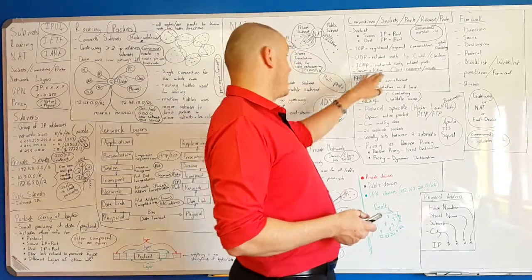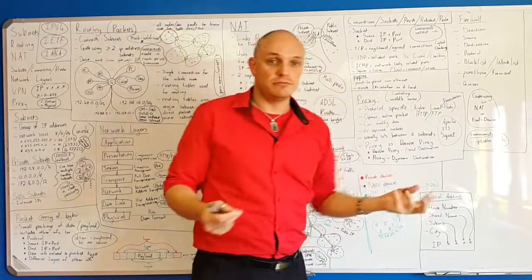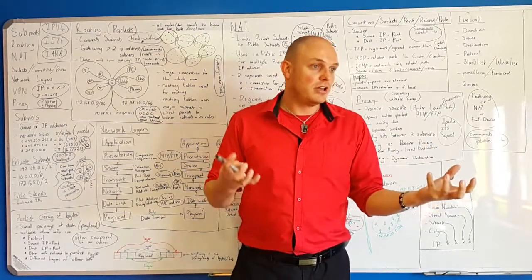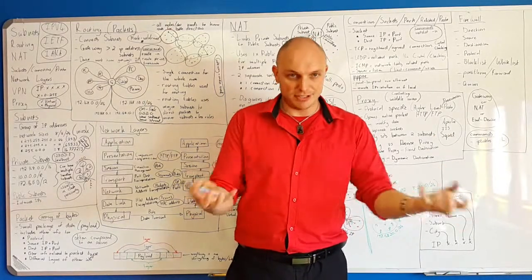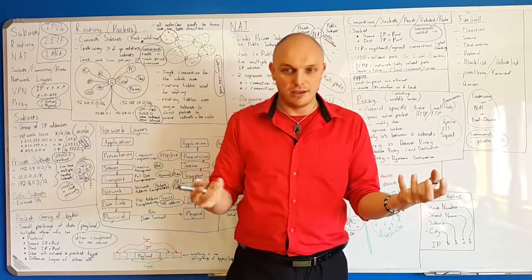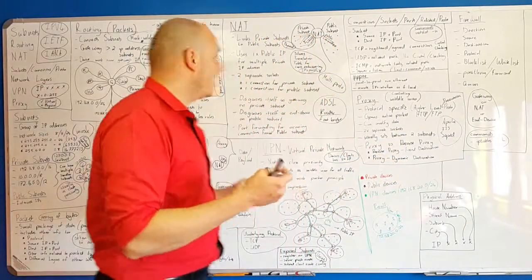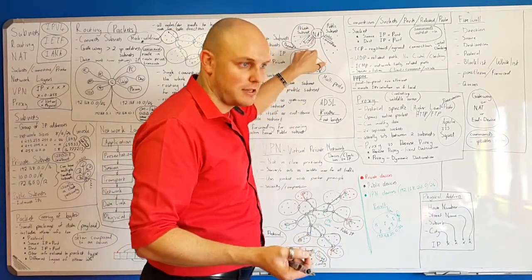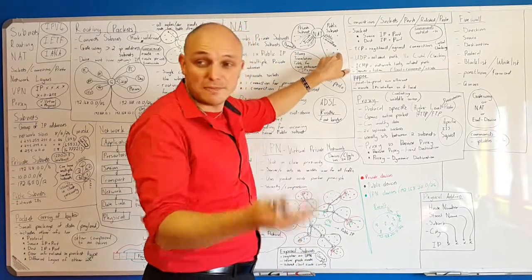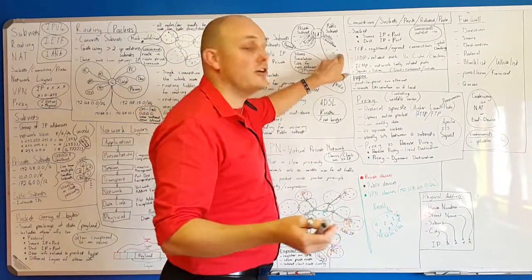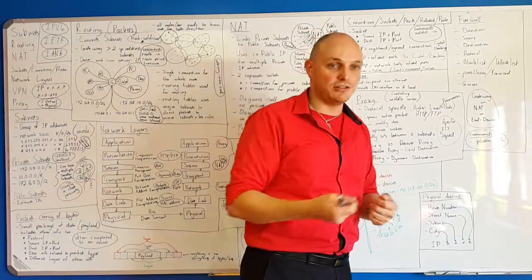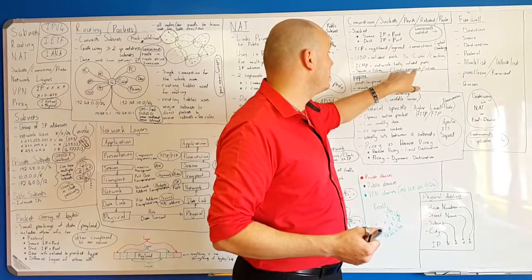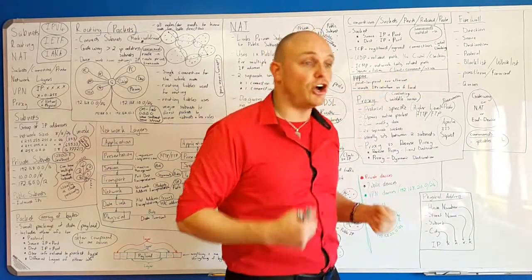When you establish a socket, there are always two parties: a server and a client. They never swap — they are always the same way around. If we're in a private subnet like here in the office, everybody in the private subnet is a client, and the servers are usually websites, videos, torrents, etc. A server is not the PC itself — it's an application that listens on a port.